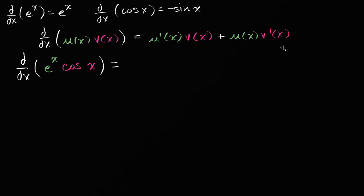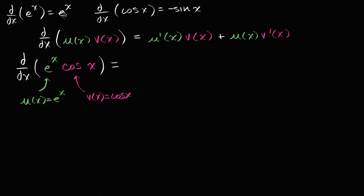Now let's apply this to our tangible example. I color coded it so we can keep track: u of x is equal to e to the x, and v of x is equal to cosine of x. If u of x equals e to the x, its derivative is still e to the x — that's one of the most magical things in mathematics, what makes e so special. So u prime of x equals e to the x, and v prime of x equals negative sine of x.